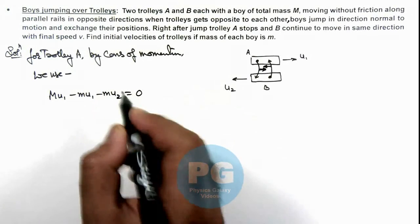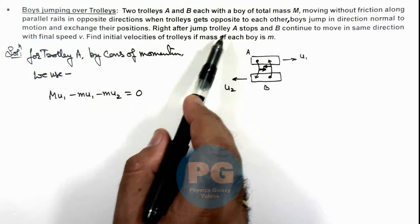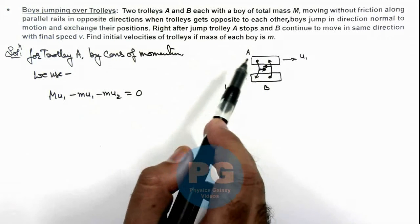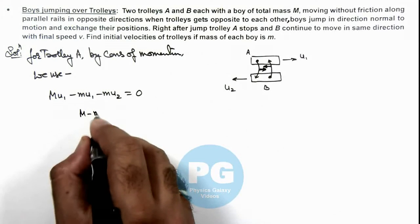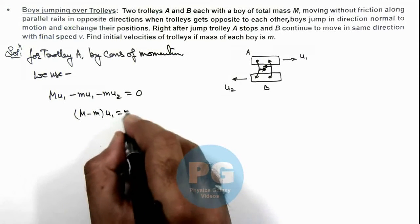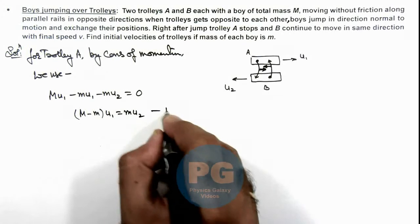This must be equal to zero because it is given that after the jump, trolley A stops. So from here we get a relation (M-m)·u1 is equal to m·u2. Say this is our equation 1.